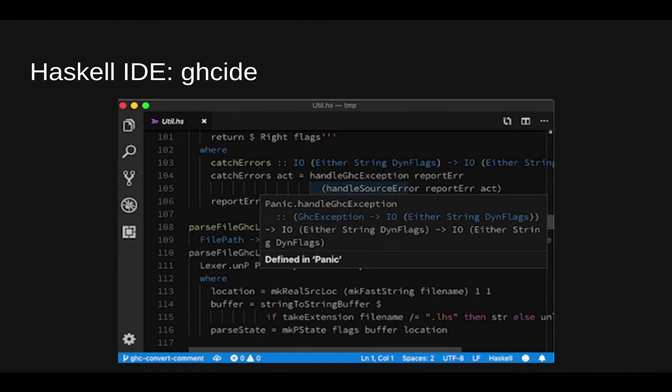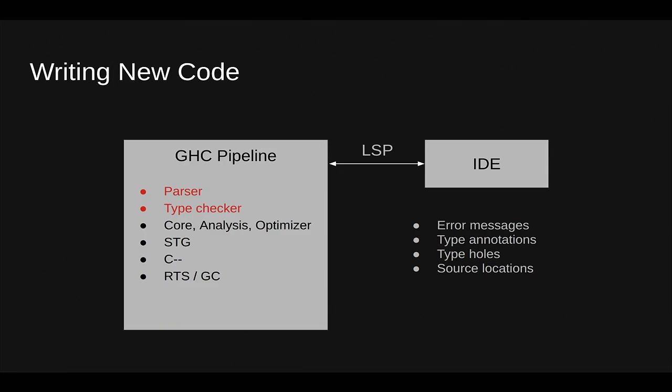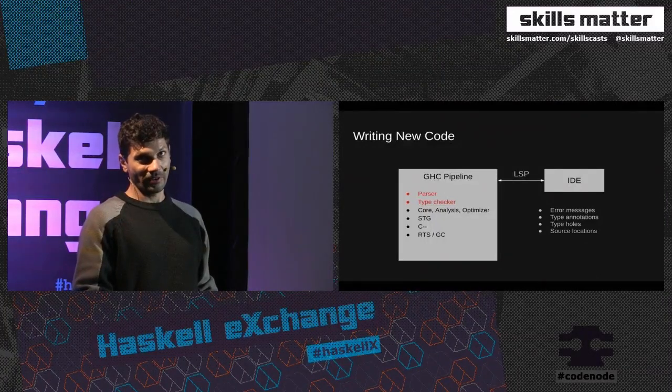You can see how it works — there's a type info window and so on. The architecture of these systems typically consists of GHC, the IDE, and the communication protocol between them — typically the Language Server Protocol. If we look underneath at how the GHC pipeline is involved and where the information comes from, it's usually just the first two phases of the pipeline: parsing and type checking. That's what these IDEs use, which covers the case when we write new code.